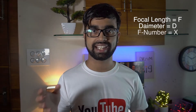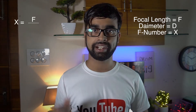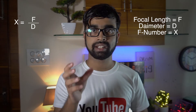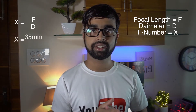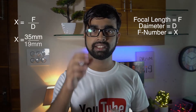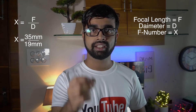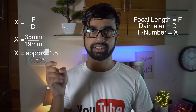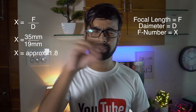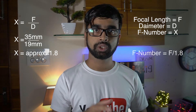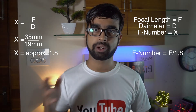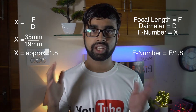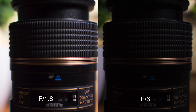Speaking mathematically, let's say the focal length is F, the diameter of the diaphragm is D, and the f-number is X — then X equals F divided by D. For example, if the focal length is 35mm and the diameter of the diaphragm is 19mm, then the f-number is approximately 1.8, written as f/1.8, which is the aperture. Everyone knows that when we increase the numerical value of the f-number, the image gets darker, and vice versa.